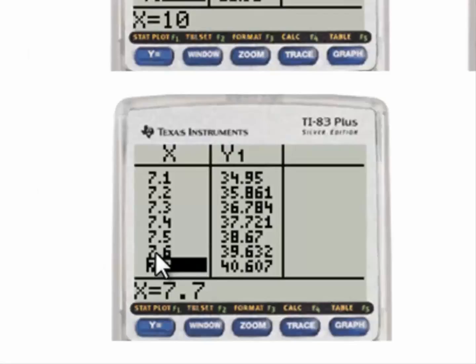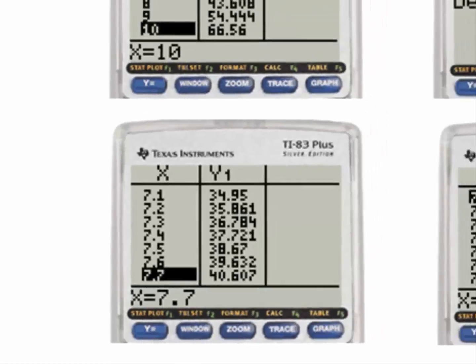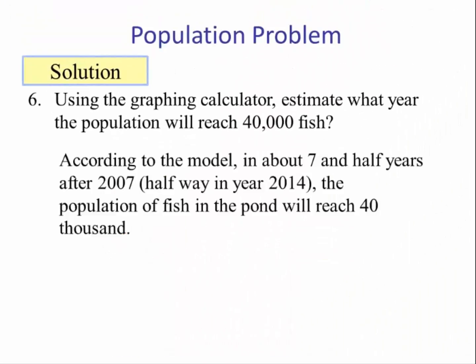So we see at about 7.6, y will be about 40. So we would say according to the model, in about 7.5 years after 2007, or about halfway in year 2014, the population of fish in the pond will reach 40,000.